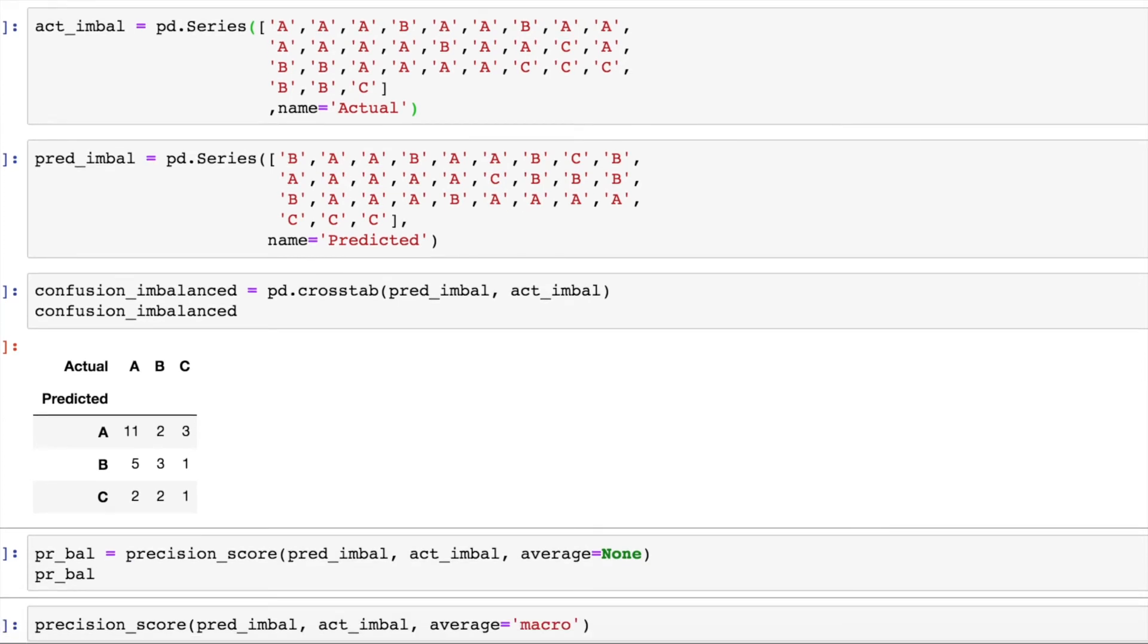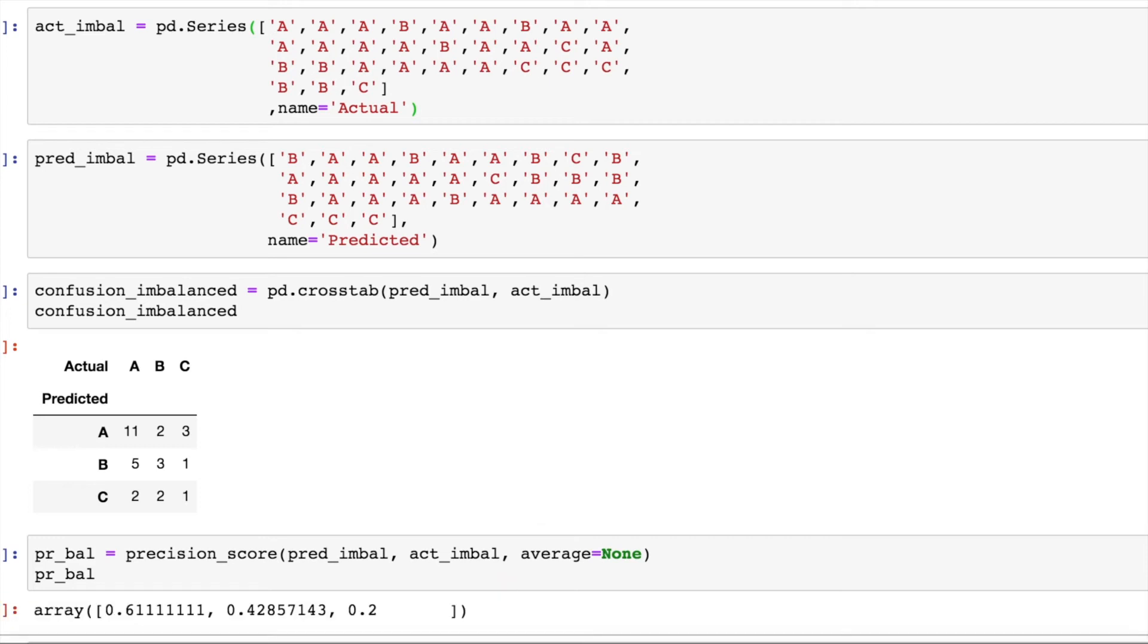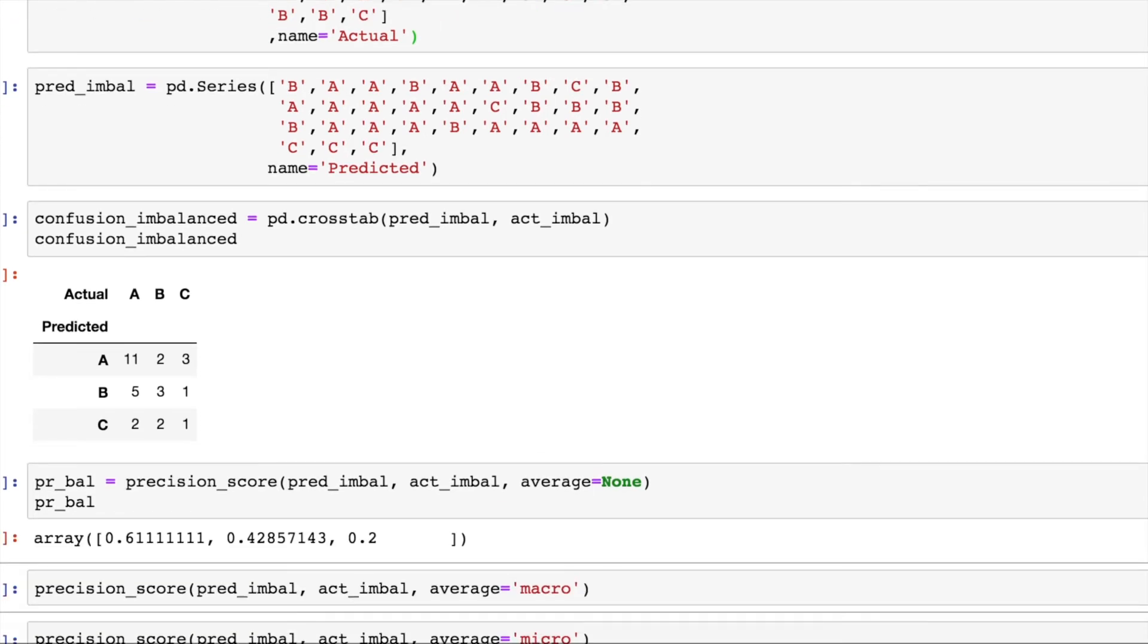This is how the confusion matrix looks like. Now, the individual precisions if you look, the first class which is class A has a precision of 0.61. The second class has a precision of 0.42 and the third class is doing really bad. It has a precision score of 0.2.